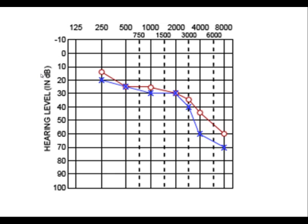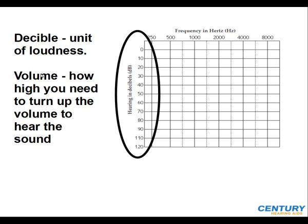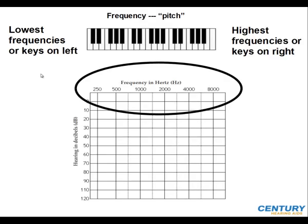The graph, or hearing loss, is measured in decibels and frequencies. Decibels is on the right-hand side, running vertically. It's a unit of loudness or volume — how high you need to turn up the volume to hear the sound. It goes from zero decibels to 120 decibels. Frequencies or pitch runs across the top. The lowest frequencies or keys are on the left, and the highest are on the right, going from 250 Hz to 8,000 Hz.